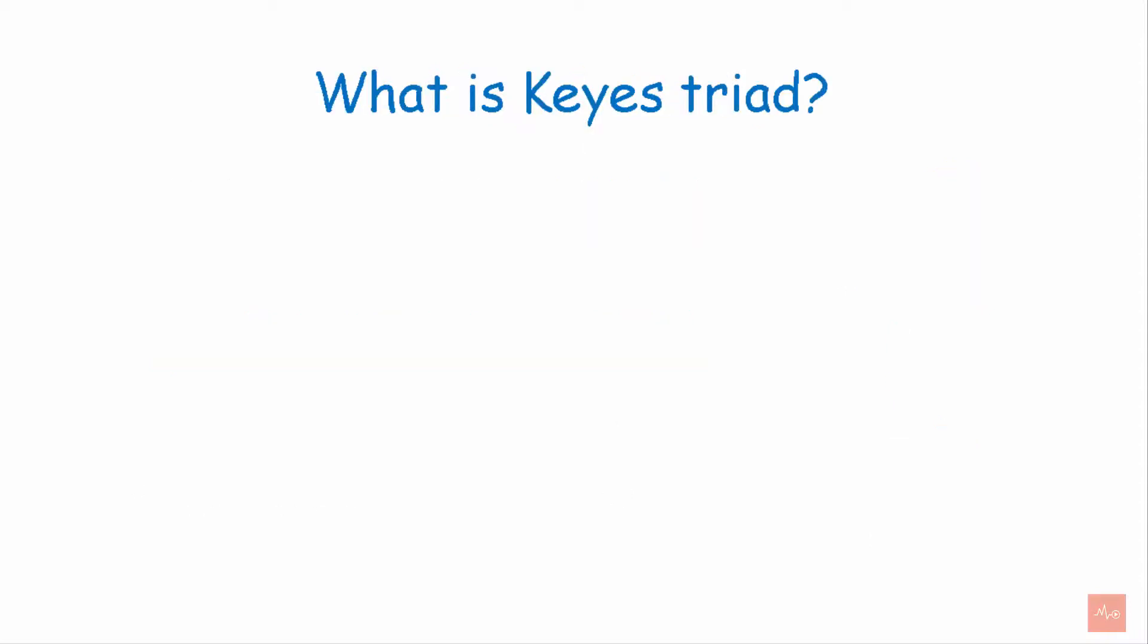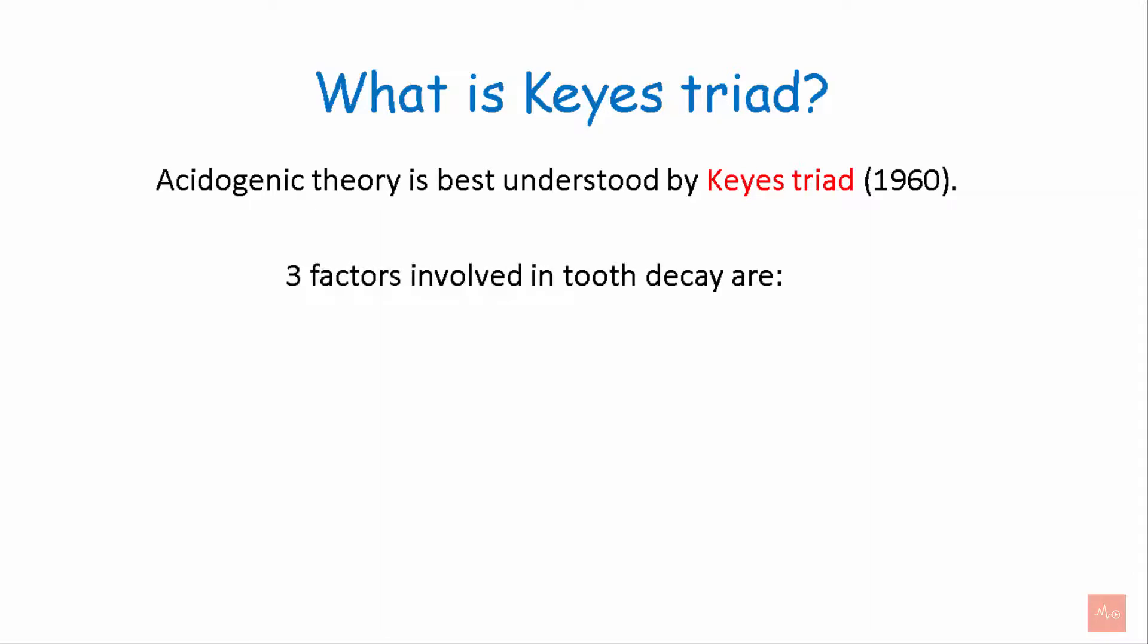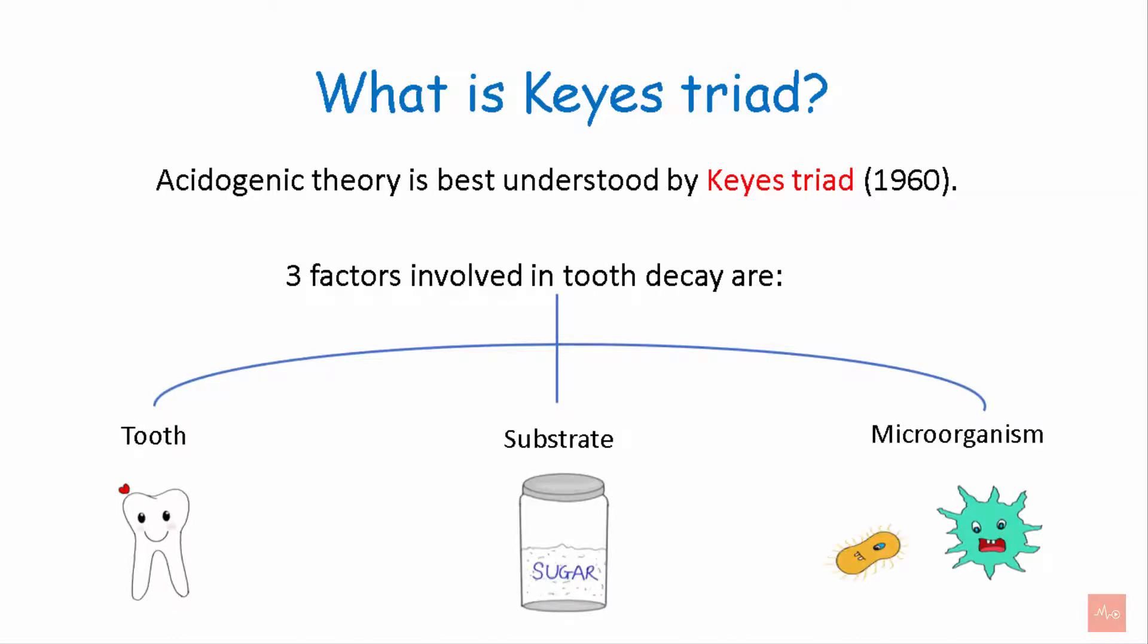Now let's see what is Key's Triad. Acidogenic theory is best understood by Key's Triad which was proposed in 1960. There are three factors that involve in tooth decay: tooth or the host, substrate, and microorganisms.